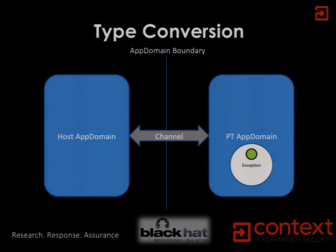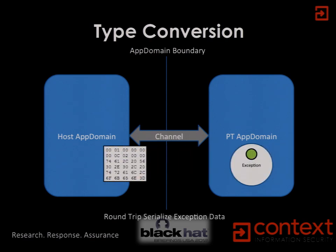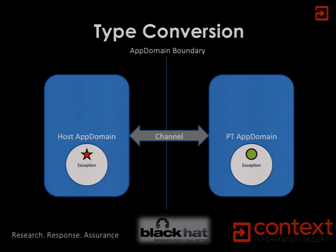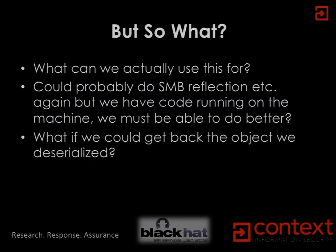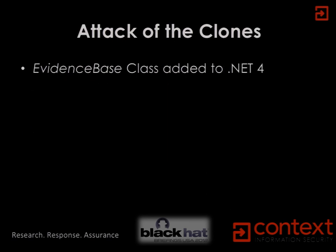Now we could use this for various things. I wanted a different way — what if I could get hold of that object back in my partial trust domain and call methods on it? I found a class for that: the EvidenceBase class, added in .NET 4, used to formalize the mechanism of evidence for trust decisions, and it's marked as serializable. It also implements a method to do a deep clone of the object. The clone method serializes the current object into a stream and then pushes it back through the binary formatter to spit out a new copy.